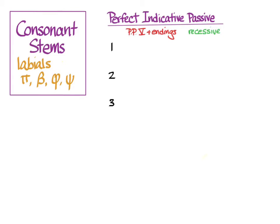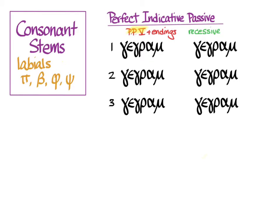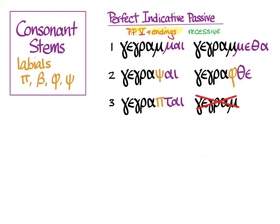Moving on to verbs with labial consonant stems. In the perfect indicative passive, we use gegrammai from grapho, whose stem is gegramm-. First person singular and plural are easy. In the second person singular we do our transformation; likewise in the third person singular. The second person plural transformation is a little different. We get rid of the third person plural and add recessive accent. The full paradigm is: gegrammai (I have been written), gegrampsai (you have been written), gegramptai (she has been written), gegrammetha (we have been written), and gegramphthê (y'all have been written).